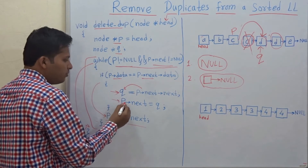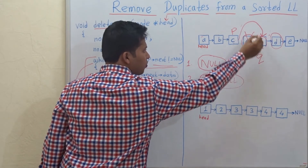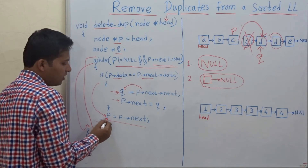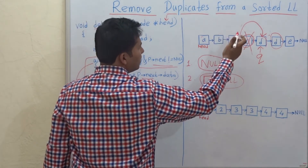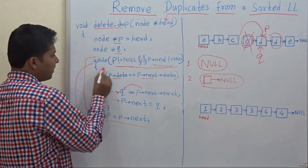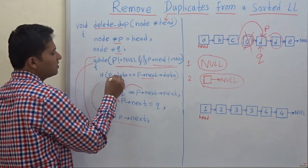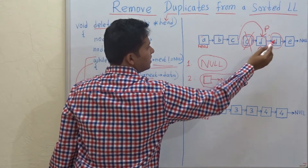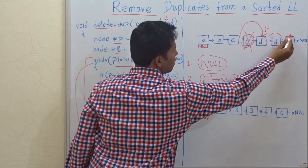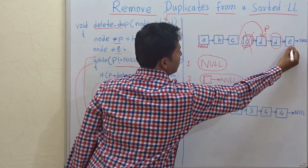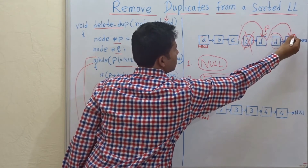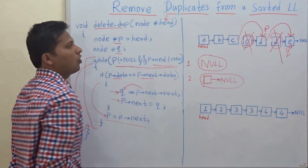The line P->next = Q reattaches the link. Then P = P->next moves P to the next node, which is now D. Again in the while loop the condition is satisfied — check if the current node's data equals the next node's data. Yes, D equals D. Same procedure: Q stores the address of E (the node after the duplicate), we remove the link and reattach it to Q, so that duplicate D node is removed from the linked list. Then P = P->next moves P to E.